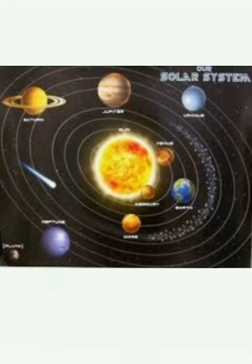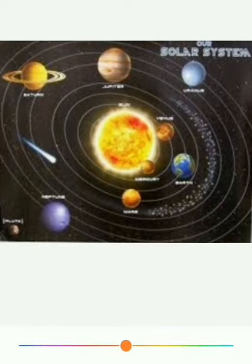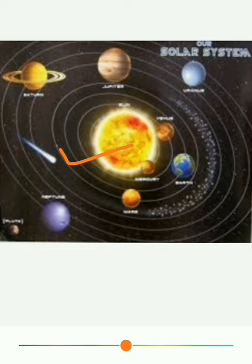Observe the picture carefully. In geocentric model, we saw earth is at the center. But in this model, we saw sun is at the center — the planets are orbiting the sun. Arya Bhatta proposed that the earth and the other planets revolved around the sun. This is known as heliocentric model.